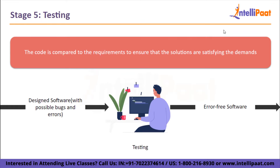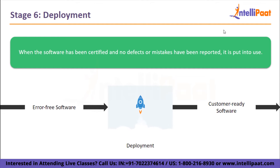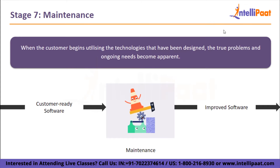Stage 5 is called testing. Following the generation of the code, it is compared to the requirements to ensure that the solutions satisfy the demands identified during the requirement stage. Unit testing, integration testing, system testing, and acceptability testing are carried out at this level. Stage 6 is deployment. When the software has been certified and no defects or mistakes have been reported, it is put into use. The software may then be delivered as-is or with proposed improvements. Stage 7 is maintenance. When the customer begins utilizing the technologies designed, the true problems and ongoing needs become apparent. Maintenance is the process when the developed product is given attention.